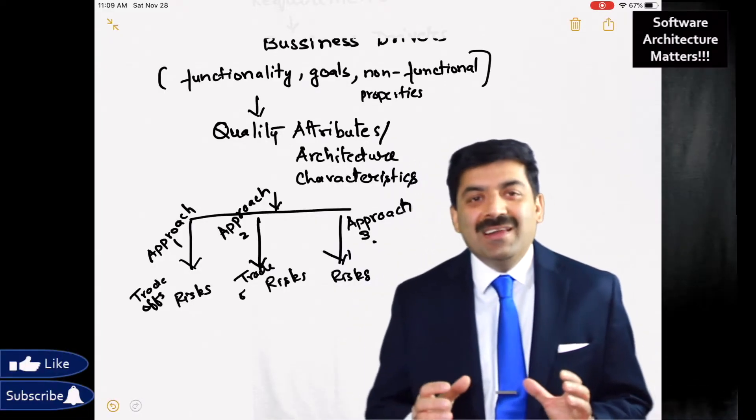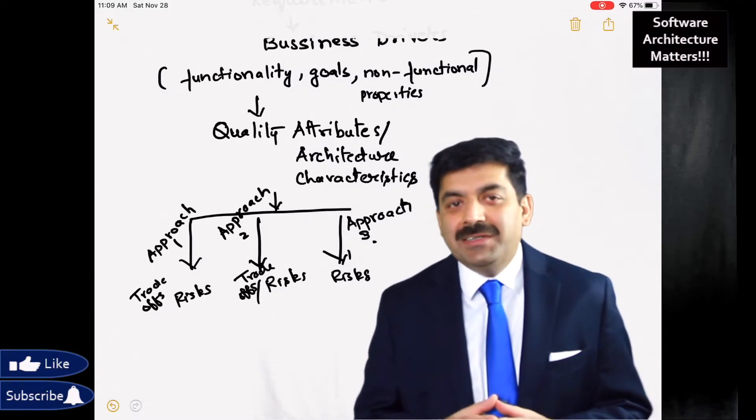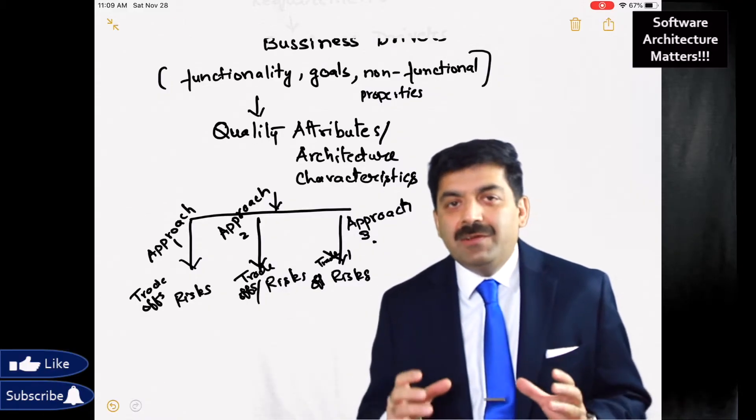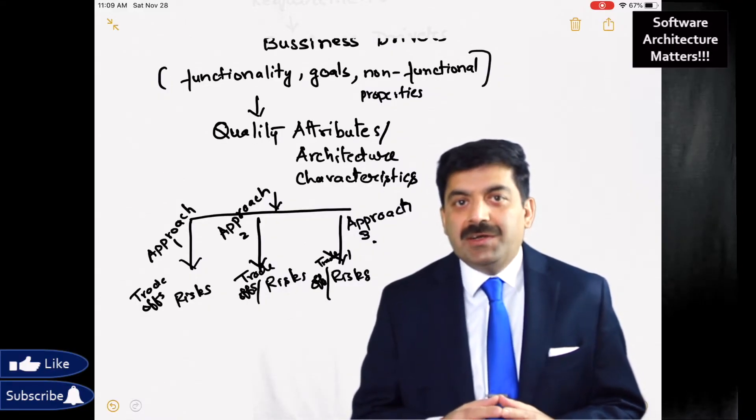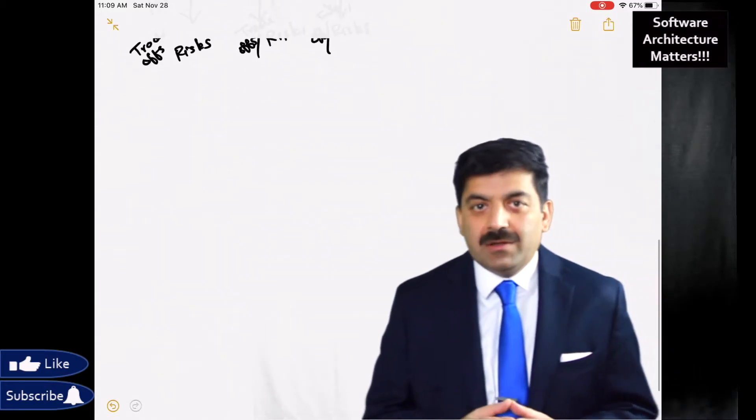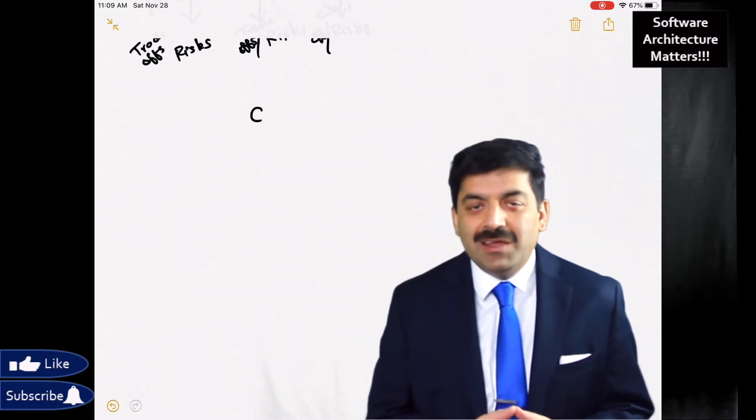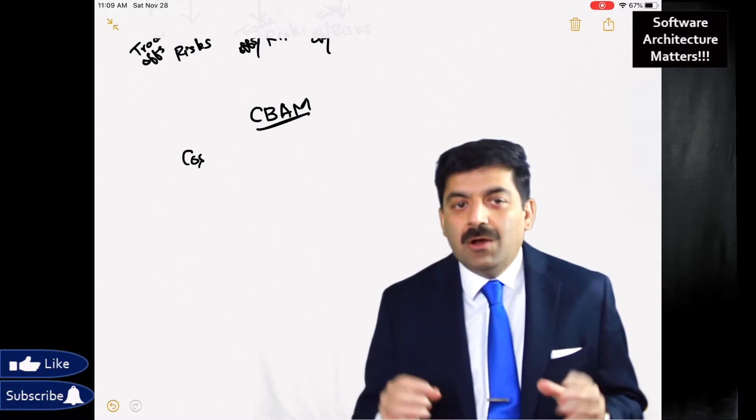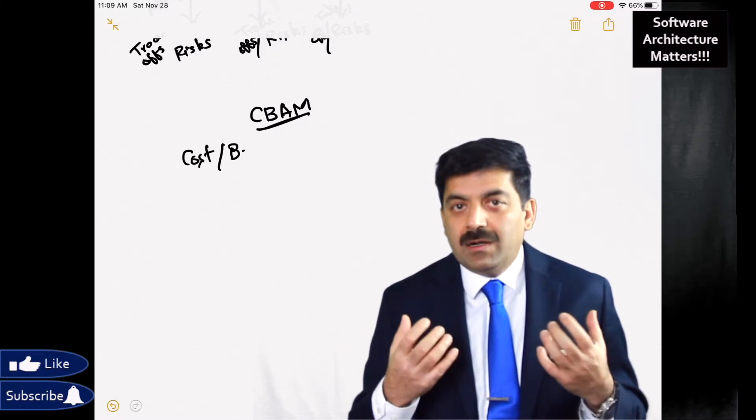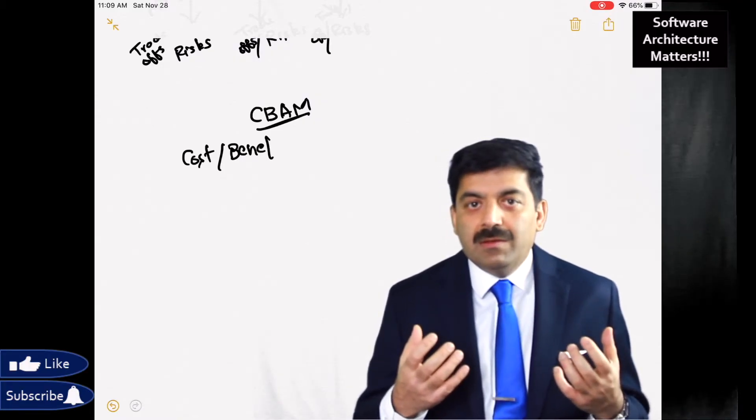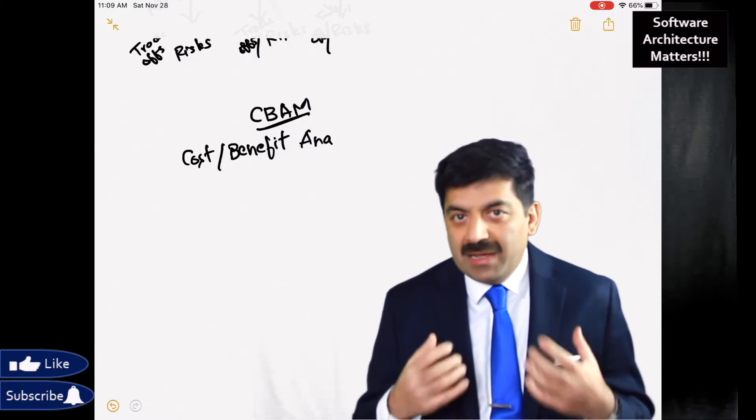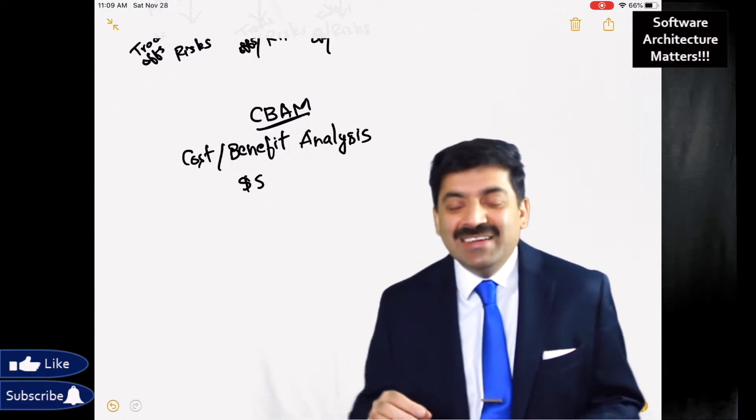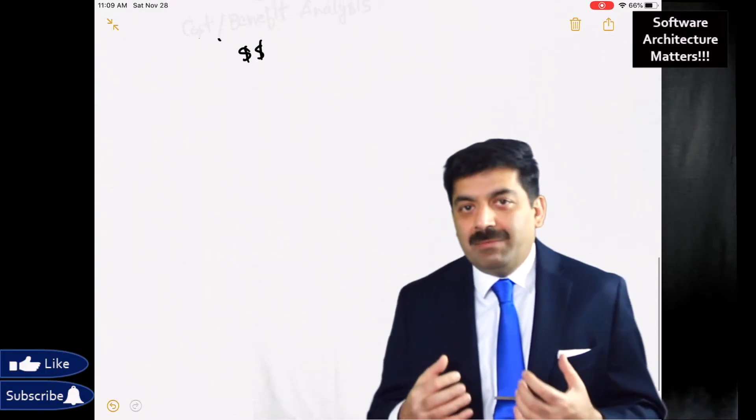Let's discuss one example. It's a little bit dated, but it's a very good example where it will show you how architectural trade-off analysis method and cost benefit analysis method helped us to come up with the best solution. How we were able to overcome our biases, our preferences, our favorite solutions.